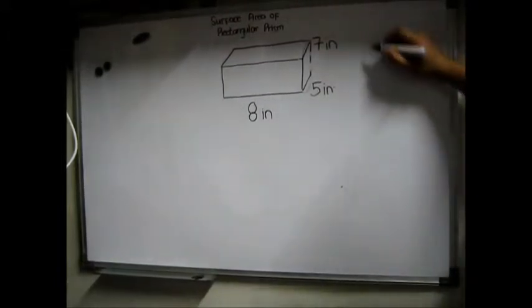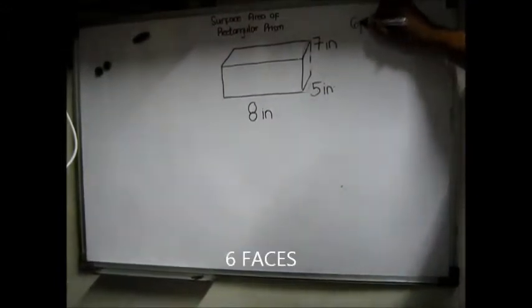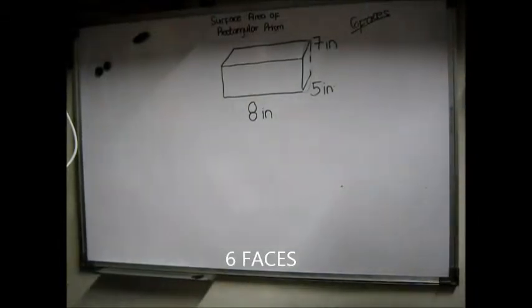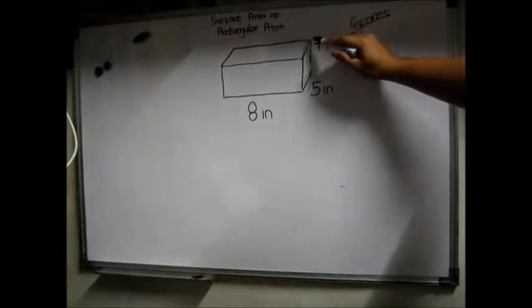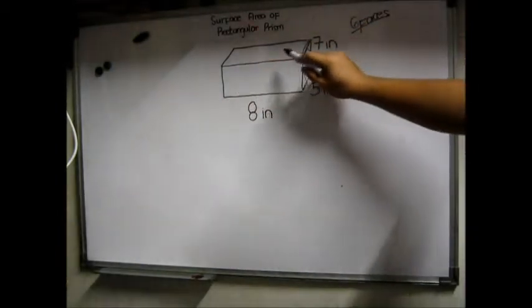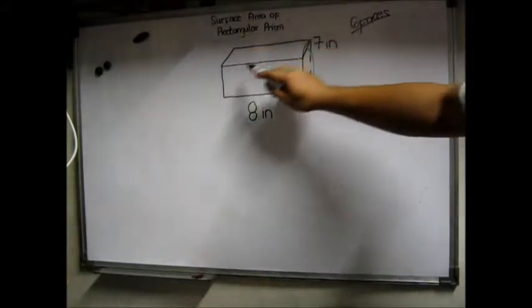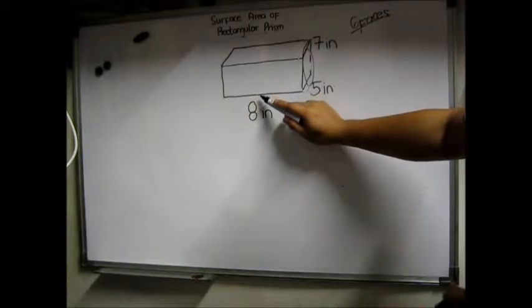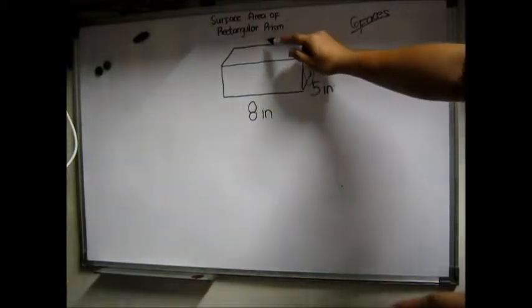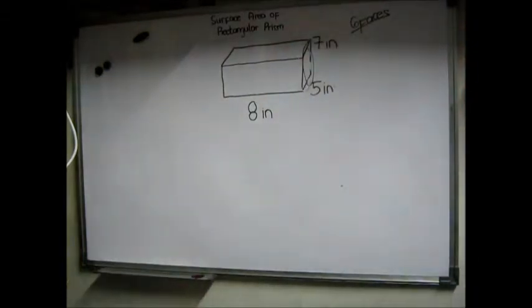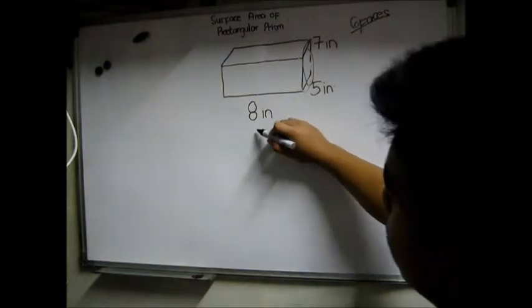When we say rectangular prism, it has six faces. The six faces I'm referring to is: the first face, the second face, the third face, fourth face on the left side, fifth face on the bottom, and the final face or the sixth face on the top.